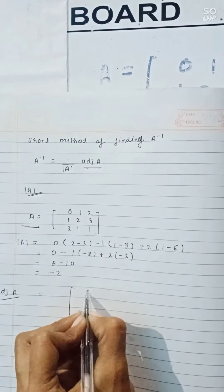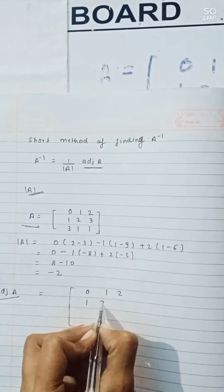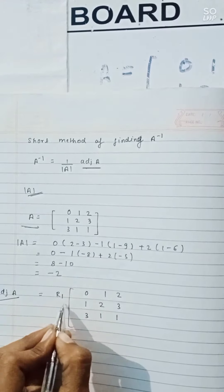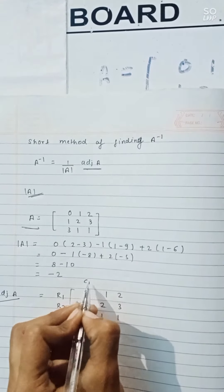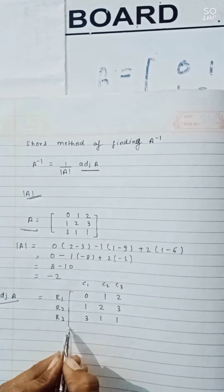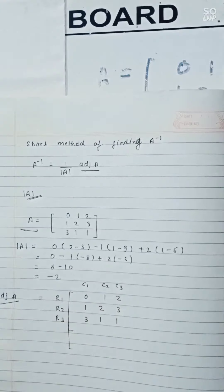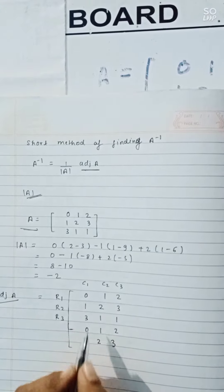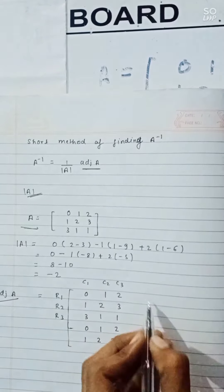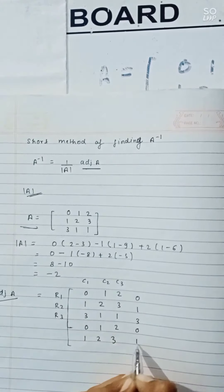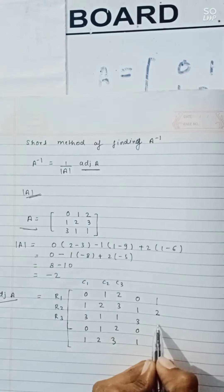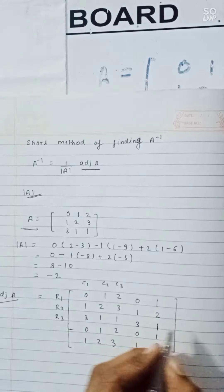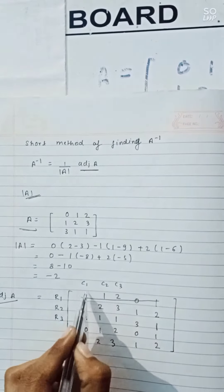Now to find the adjoint of A using the shortcut, we write the matrix as it is: [0, 1, 2 / 1, 2, 3 / 3, 1, 1]. This gives us row 1, row 2, row 3 and column 1, column 2, column 3. We then repeat row 1 and row 2 below — [0, 1, 2] and [1, 2, 3] — and repeat column 1 and column 2 to the right: 0, 1, 3, 0, 1 and 1, 2, 1, 1, 2.